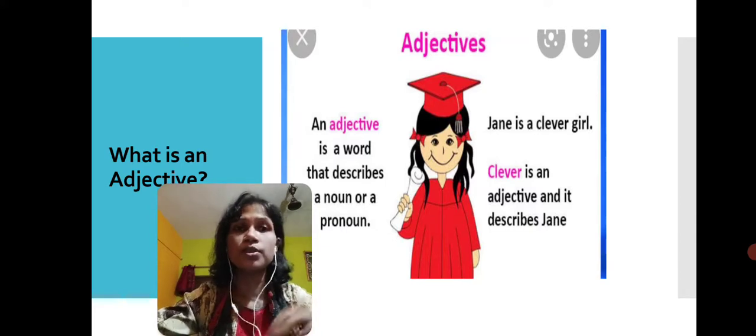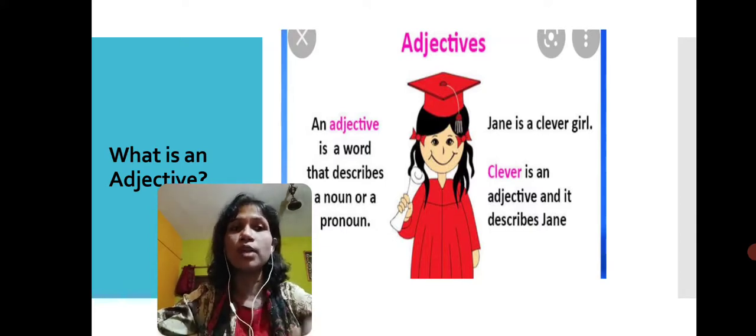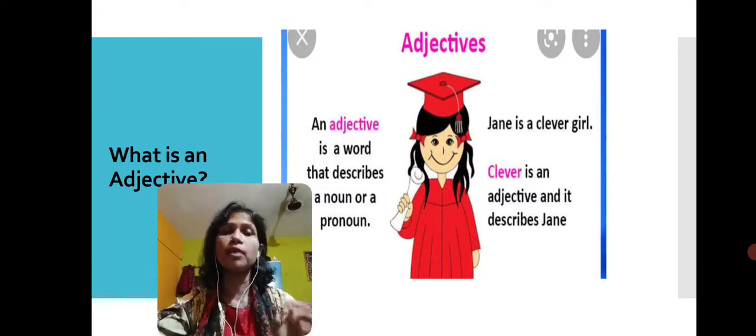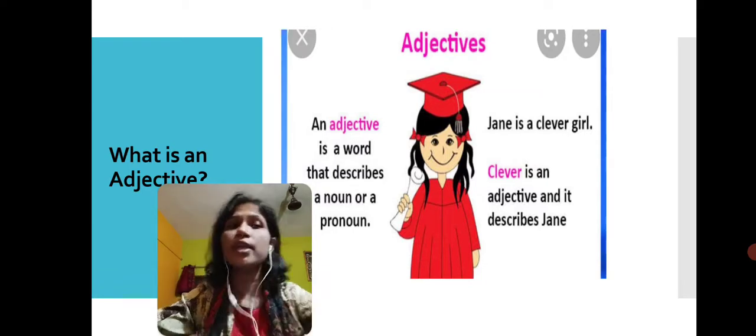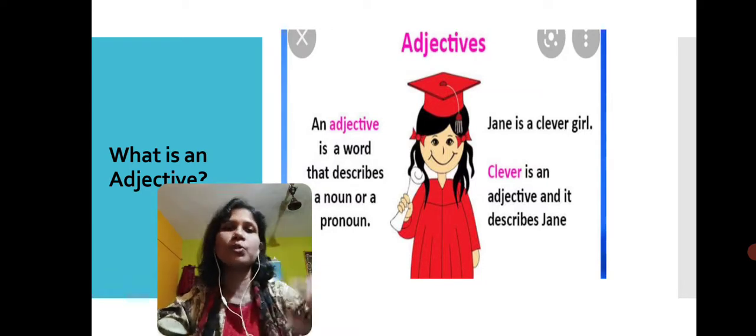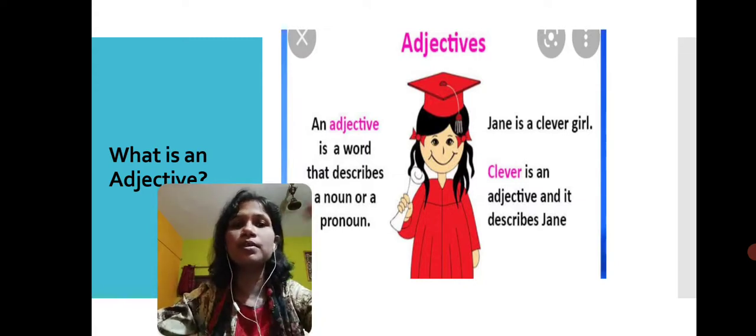The adjective is a particular word that describes a noun or a pronoun. It tells more about a noun or a pronoun. Now, Jane is a clever girl. The girl you can see in this picture, her name is Jane, and how is she? She is a clever girl.